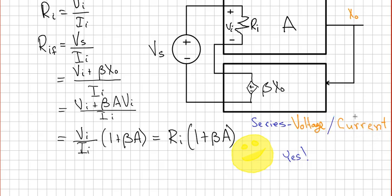Let's go look at an input that's made for current. This would be a parallel type feedback amplifier.